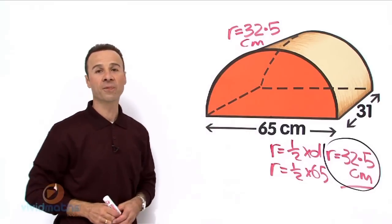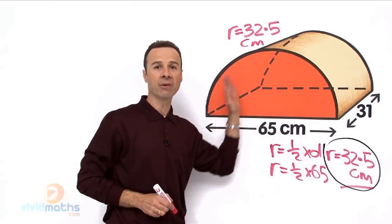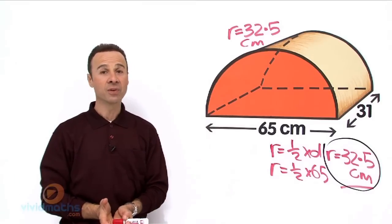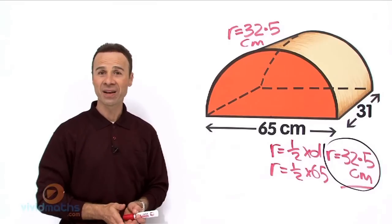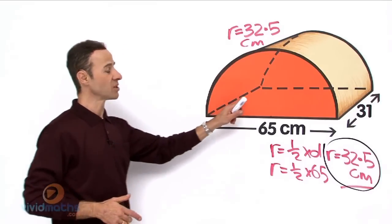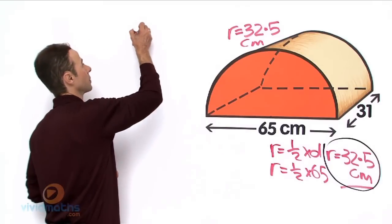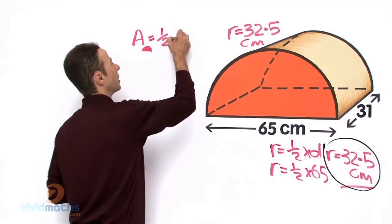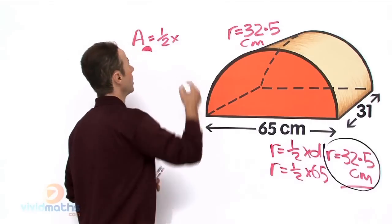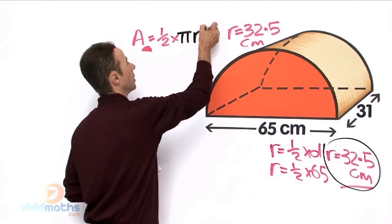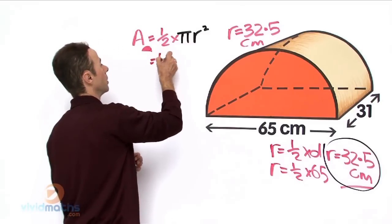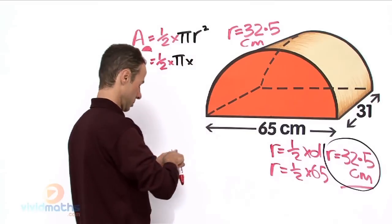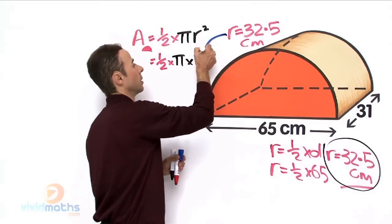Ok, let's get the area of that face, that orange face, that semicircular area across there. Now we know the area for a full circle is πr² and if you didn't know that now you know it, and so we are just going to halve that. Let's go for the area of this orange semicircular face. There's our radius again.